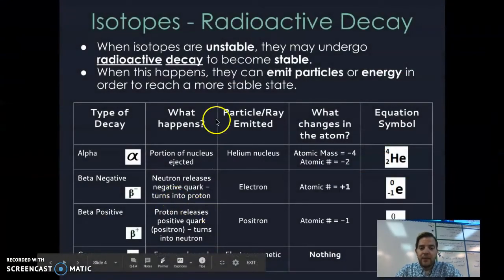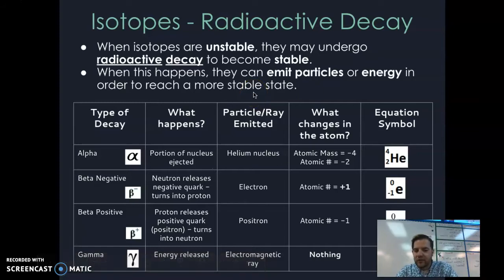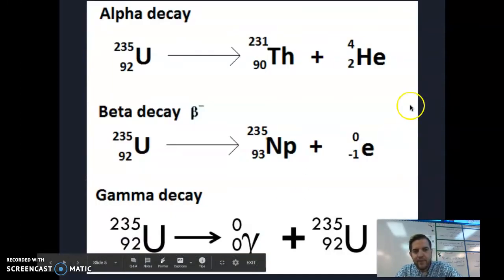The last type is gamma. Gamma has no mass, no charge—it's just an electromagnetic wave. That's the primary radiation people are concerned about with nuclear decay because it's very high energy, can pass through anything, and can be rather dangerous.